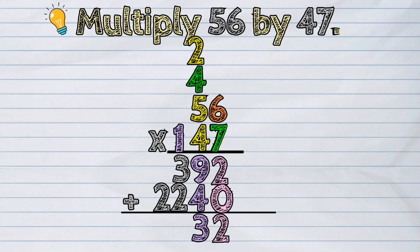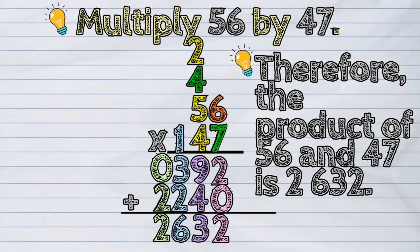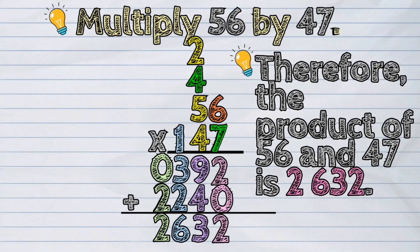Next, 1 hundred plus 3 hundreds plus 2 hundreds is 6 hundreds. Lastly, 0 plus 2 thousands is 2 thousands. Therefore, the product of 56 and 47 is 2,632.